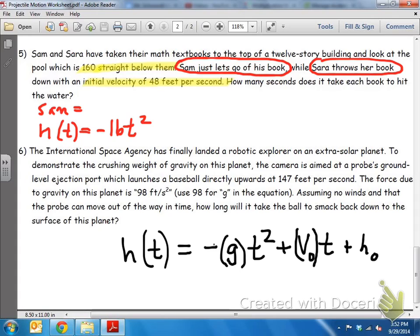So Sam's equation, height with respect to time equals negative 16t squared. Negative 16 is there because that's the constant of gravity on Earth in feet per second. And then Sam doesn't have an initial velocity, so zero t. And then plus 160, because they're both at the top of the building. Sarah has an initial velocity, so everything will look the same, except the initial velocity, which is 48t plus 160.